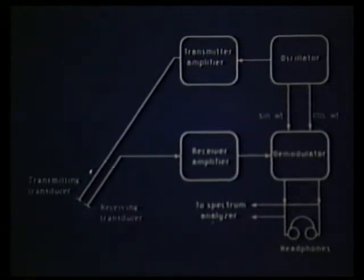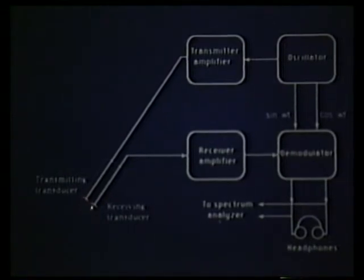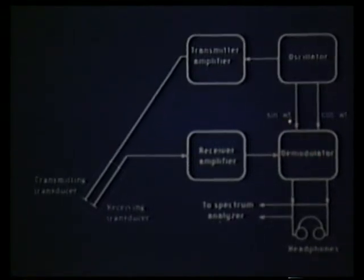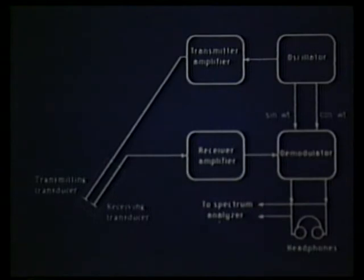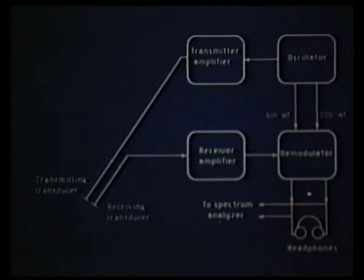The signal produced by the oscillator is transmitted to the transmitting ceramics. The received signal is amplified and then sent to a demodulator, where it is compared with two signals in quadrature in order to detect the positive or negative value — that is, the sign of the Doppler frequency shift.